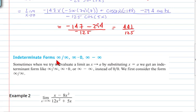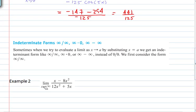These are other indeterminate forms: infinity over infinity, infinity times 0, infinity minus infinity — and we can evaluate all of these limits. Looking at problem two: the limit as x goes to infinity gives essentially infinity minus infinity squared, which is infinity, and infinity plus infinity is infinity — an indeterminate form, so L'Hopital applies.